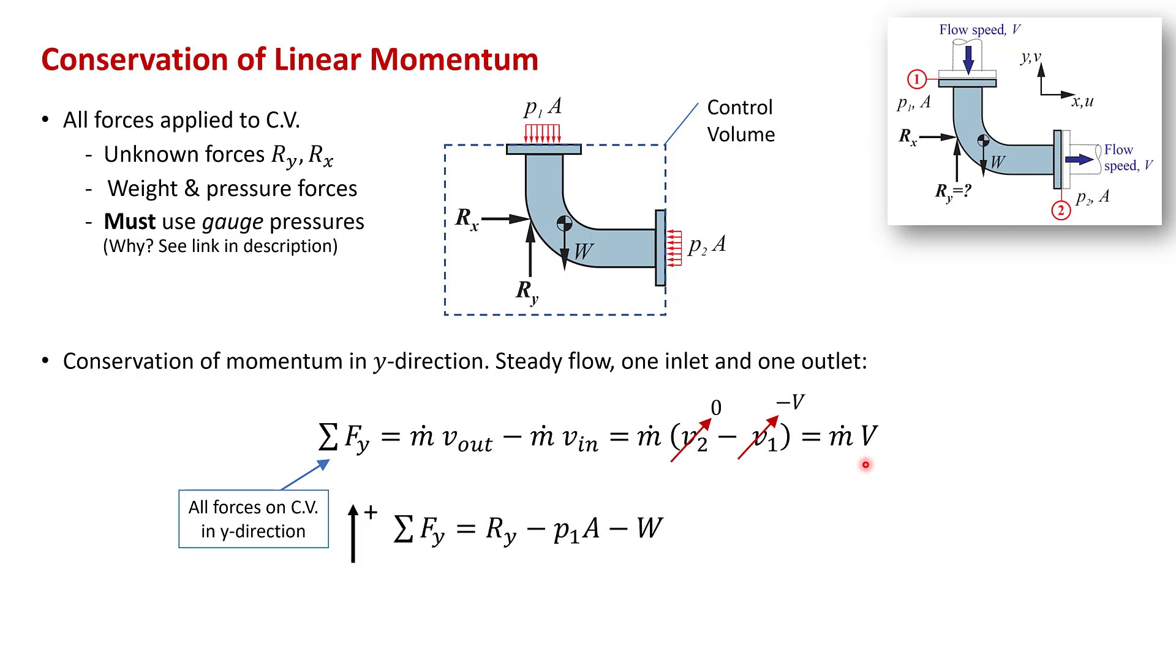Next, we consider the sum of the forces on the control volume and we put all the forces on the control volume including the unknown reaction. Notice that y is positive in the upward direction. So the sum of the forces in the y direction is ry because ry is positive upwards here. p1A acts downward. So it's equal to minus p1A and obviously the weight of the elbow in the fluid in the elbow acts downwards. So that's minus W. And we set all of this equal to the rate of momentum out minus the rate of momentum in in the y direction. So we just set that equal to m dot v. Now we can solve for this unknown y reaction force and that just becomes ry equals p1A plus W plus m dot v.